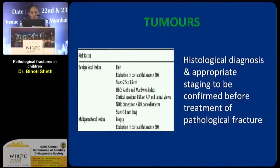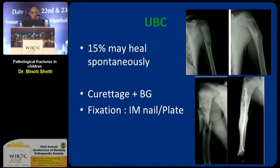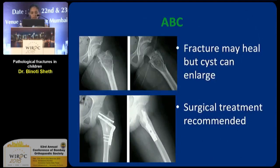Finally, we have a set of tumors, some benign and malignant, which can lead to pathological fractures, especially if the lesions are big or there is cortical erosion. Histological diagnosis and appropriate staging is to be confirmed before treatment of all these pathological fractures. Unicameral bone cysts leading to fracture is common — 15% of them, especially in the humerus, heal spontaneously, but others may require curettage, bone grafting, and fixation. Aneurysmal bone cysts with fracture may heal, but the cyst usually enlarges, so surgical treatment is recommended.